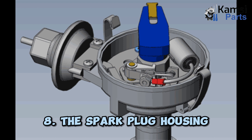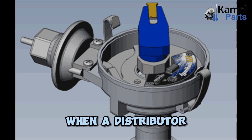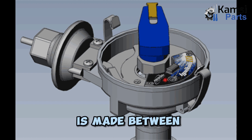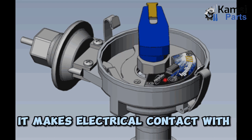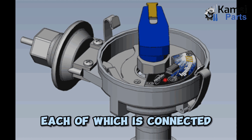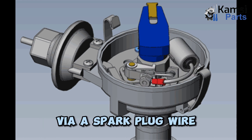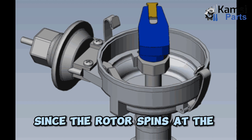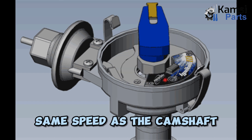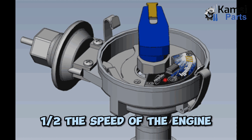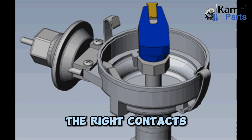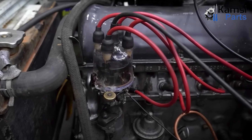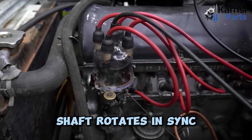The spark plug housing is grounded to the engine. When a distributor cap is installed, an electrical connection is made between the central contact point of the cap and the rotor. Then, as the rotor turns, it makes electrical contact with outer contact points, each of which is connected to a spark plug via a spark plug wire. Since the rotor spins at the same speed as the camshaft, and the camshaft rotates at one-half the speed of the engine, the rotor can be made to always line up with the right contacts in the distributor cap at the correct time, since the distributor shaft rotates in sync with the engine.